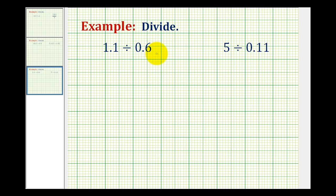We want to perform division by a decimal. So the first step is to write this in long division form. The first example will have 1.1 divided by 0.6.